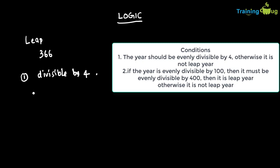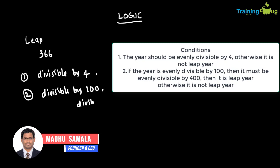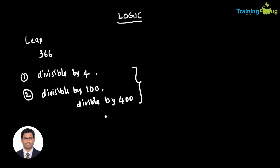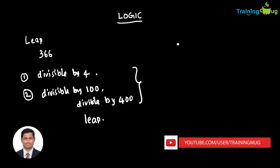Even if it is divisible by four, we need to check a second condition: whether it is divisible by 100. If it is divisible by 100, there is a chance it could be a leap year, but we need to check one more condition — it should also be evenly divisible by 400. If it satisfies all three conditions then we can say it is a leap year; otherwise it is not. We are going to use nested if-else statements to identify this.